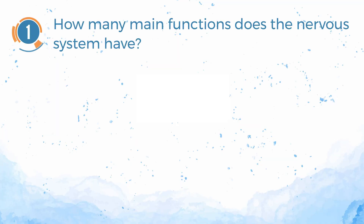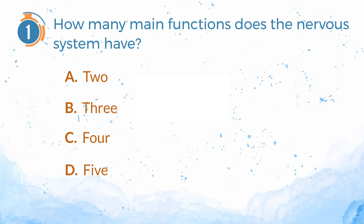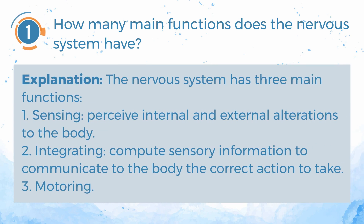Number 1. How many main functions does the nervous system have? A. 2. B. 3. C. 4. D. 5. The answer is B. 3. The nervous system has three main functions.